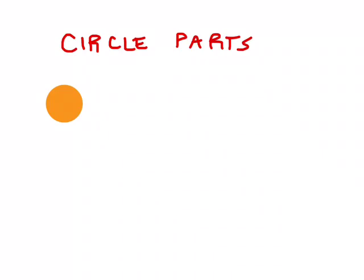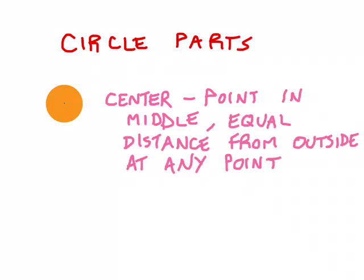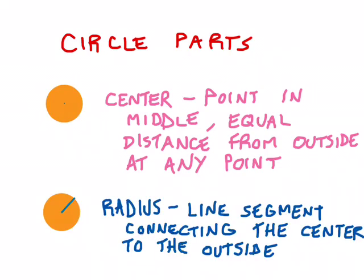When you look at a circle, there's a bunch of parts that you might need to know. The first one is the center. The center is a really important part of the circle because a lot of other pieces reference it. It's the single point in the middle of the circle that is equally far from all points on the outside. The distance from the center to any spot on the outside is called the radius — a line segment that connects the center to the outside of the circle, and there are potentially an infinite number of radii.